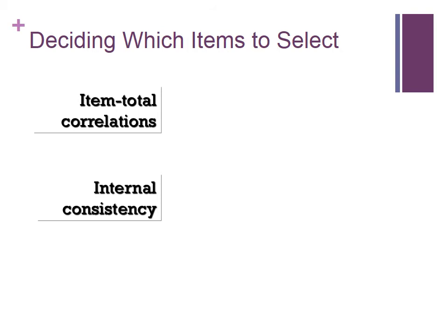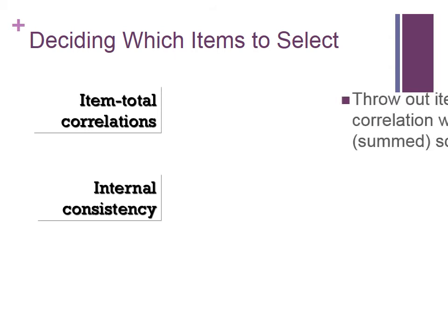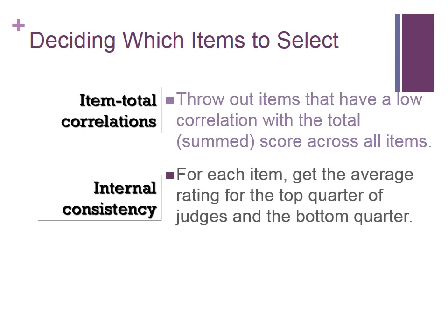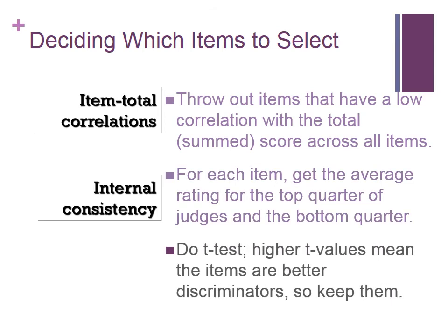Once you get your scores from your judges, you use certain statistical techniques to decide which items to keep. For those interested: you can use correlations — items with low correlations with the overall sum of items are candidates for removal. You also use T-tests and other statistical procedures to measure internal consistency, going through an analytical procedure until you end up with the final set of items.